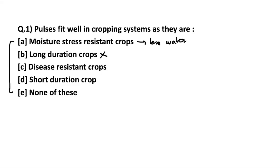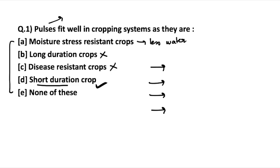Option 'long duration crop' is incorrect. 'Disease resistant crop' is again incorrect. The fourth option, 'short duration crop,' is correct and more appropriate than 'moisture stress resistant crops.' There are various features of pulses because of which the government also suggests farmers to grow pulses when there is less water or when they are not able to grow their main crop properly. So pulses are short duration crops.